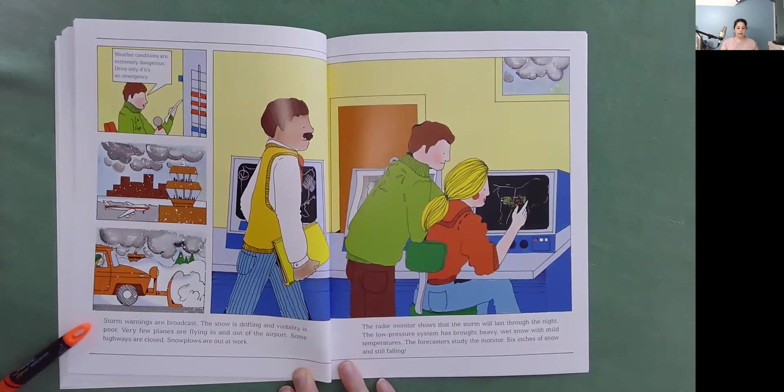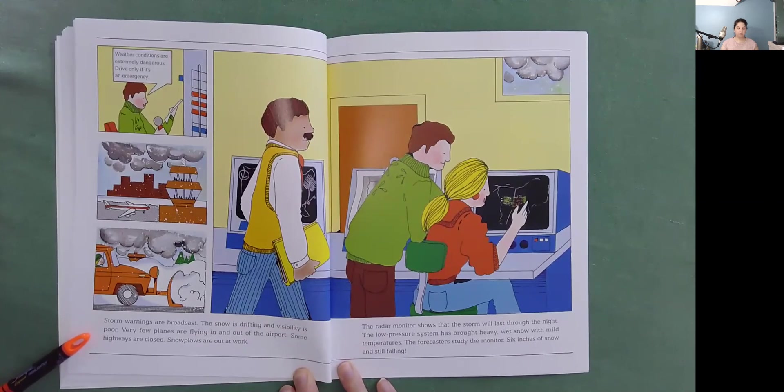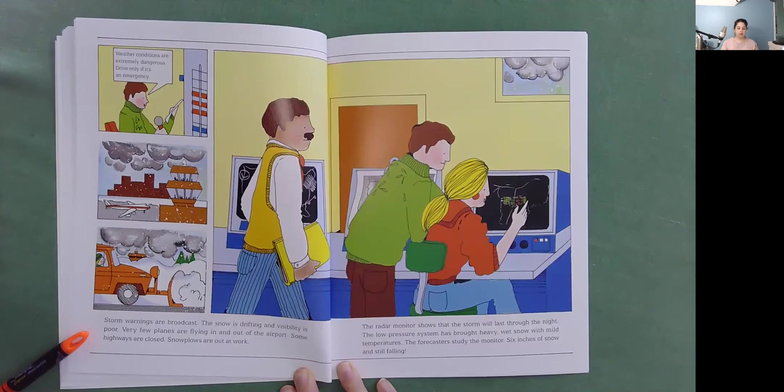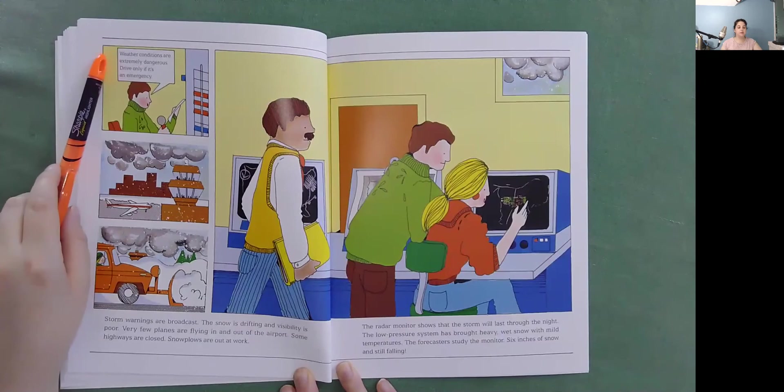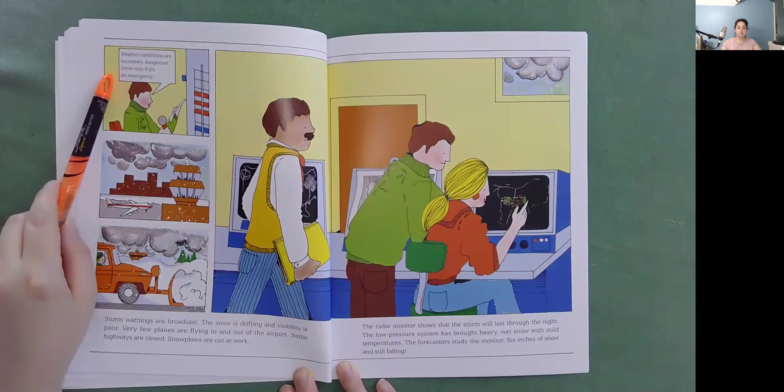Storm warnings are broadcast. The snow is drifting and visibility is poor. Very few planes are flying in and out of the airport. Some highways are closed. Snow plows are out at work. So here, the forecasters saying, weather conditions are extremely dangerous. Drive only if it's an emergency.